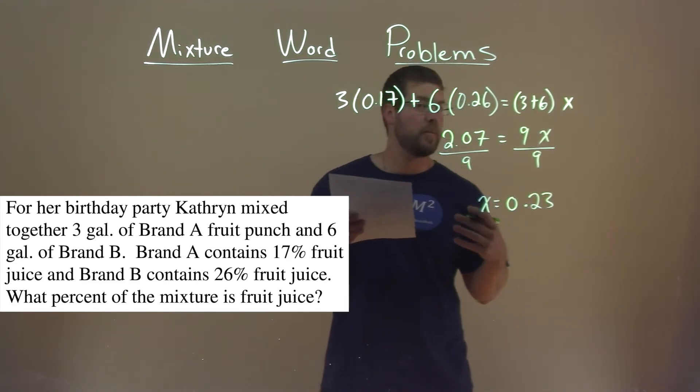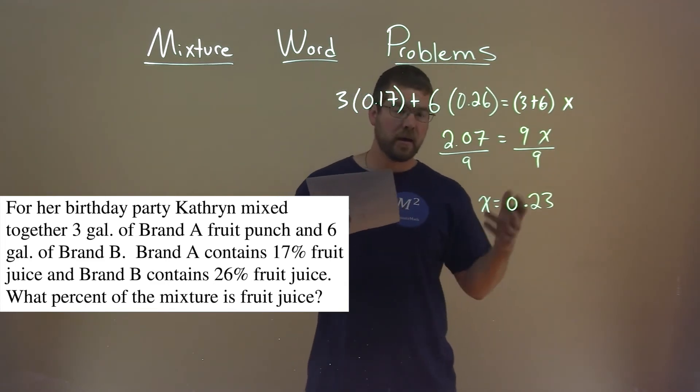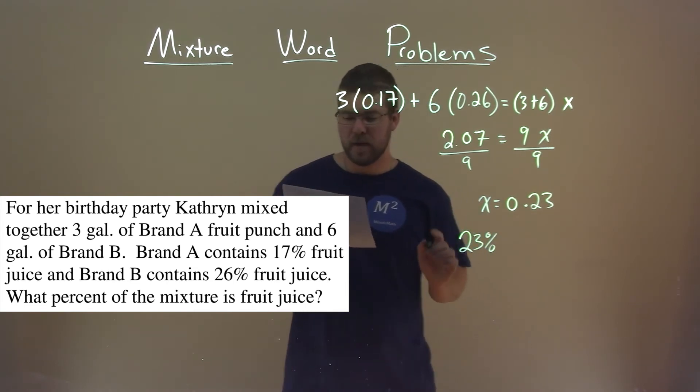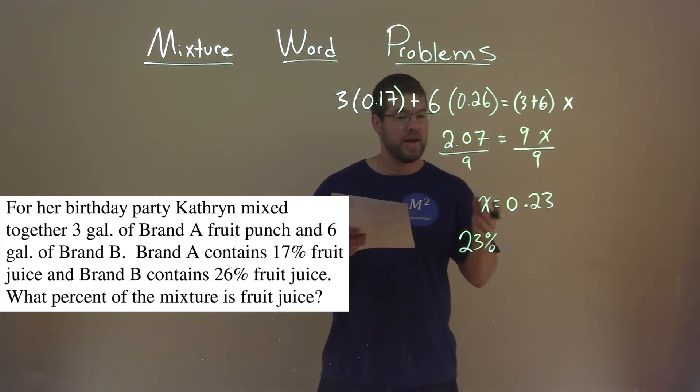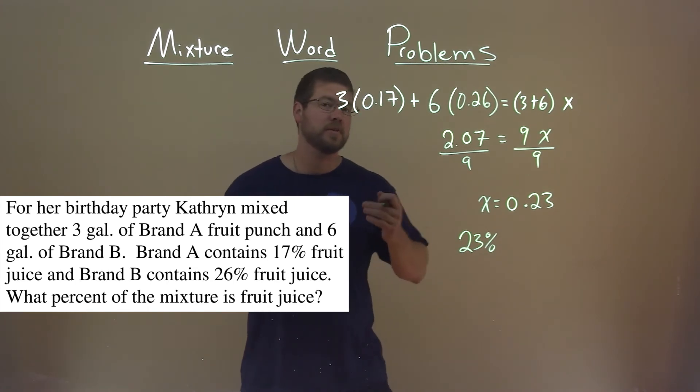That decimal has a percent, which means we convert back. Move the decimal place two spots to the right, we have 23%. And so, the final mixture has 23% fruit juice.